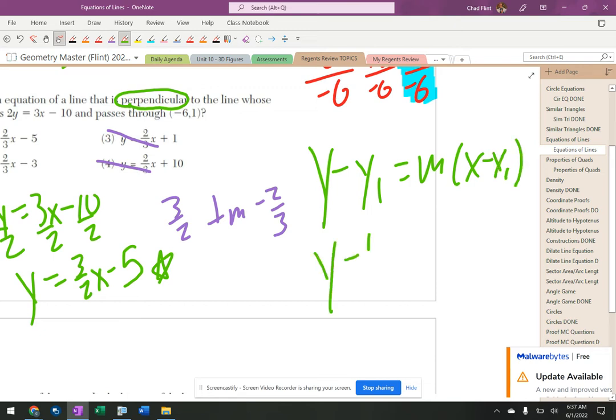That's y minus 1 equals, m is negative 2 thirds, negative 2 thirds times x minus negative 6. That's y minus 1 equals negative 2 thirds times x plus 6.